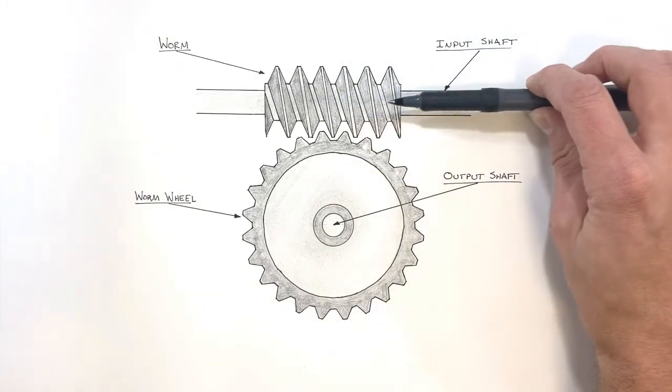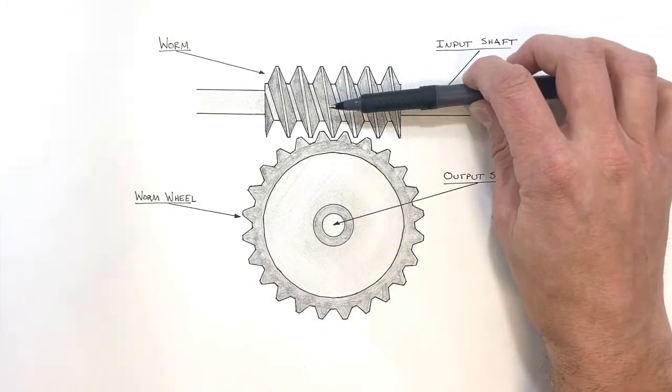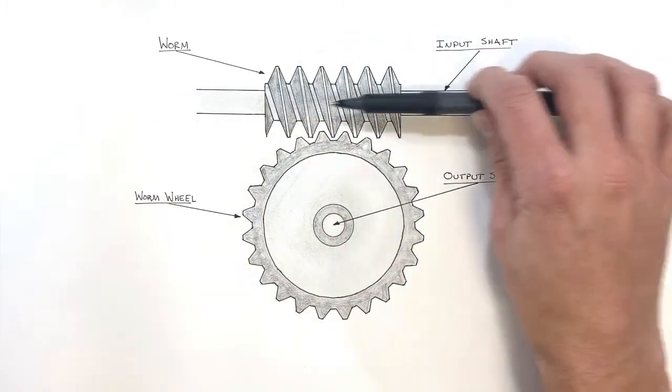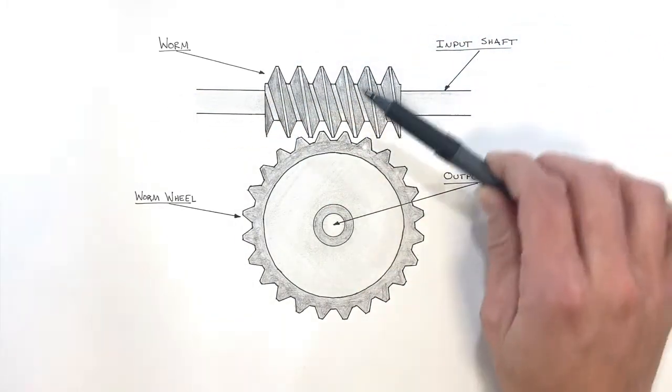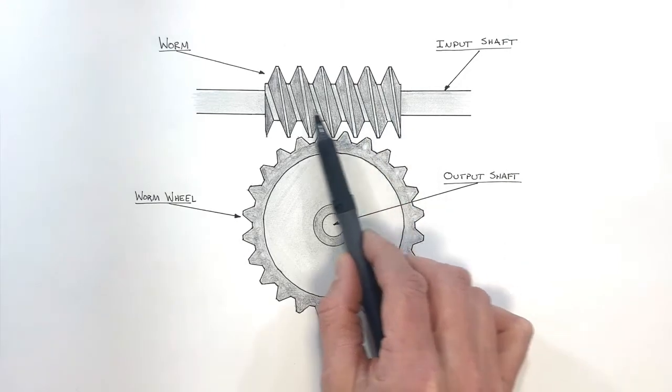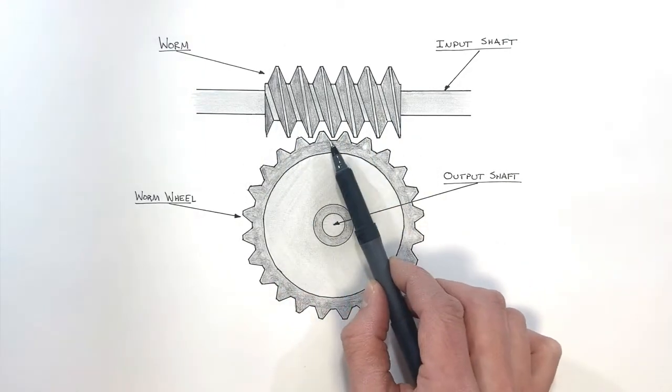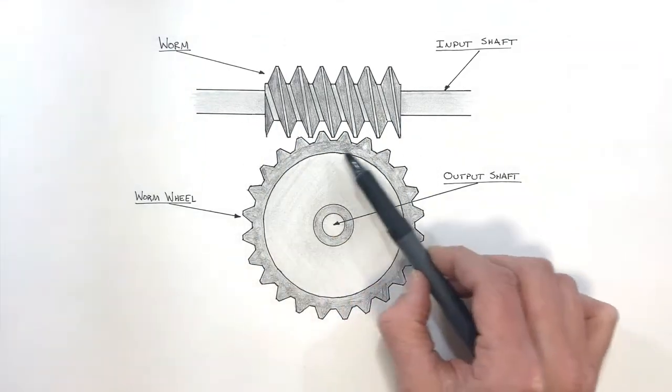As this rotates, the gear, or really it looks like a screw, wouldn't be free to move left and right. It would only rotate. And as this worm gear rotates, it in turn turns the worm wheel with it.